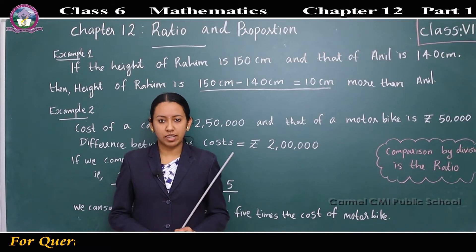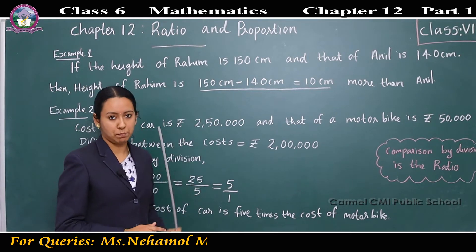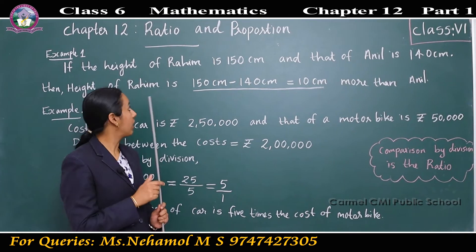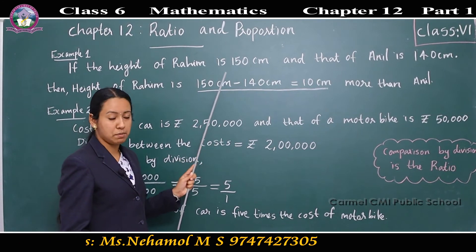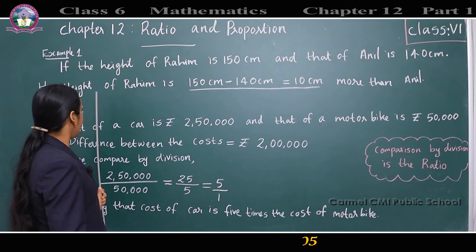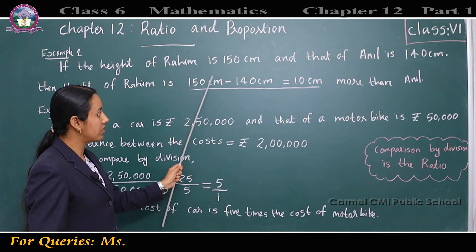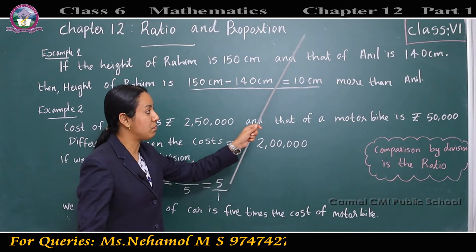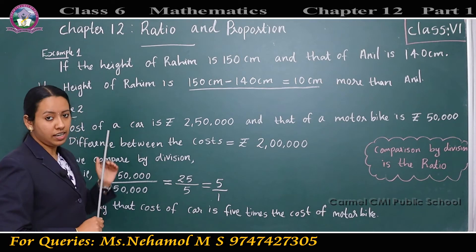Good morning children. Today we are going to study Chapter 12: Ratio and Proportion. In our daily life we compare quantities of the same type many times. For example, if the height of Rahim is 150 centimeters and that of Anil is 140 centimeters, then we can say height of Rahim is 10 centimeters more than Anil. This is comparison by taking difference.